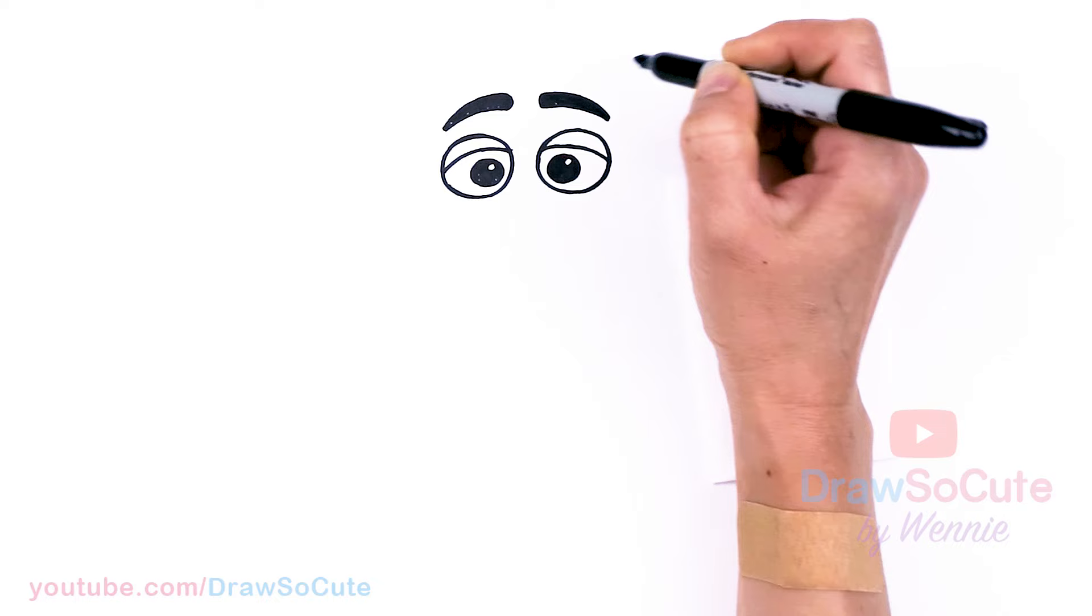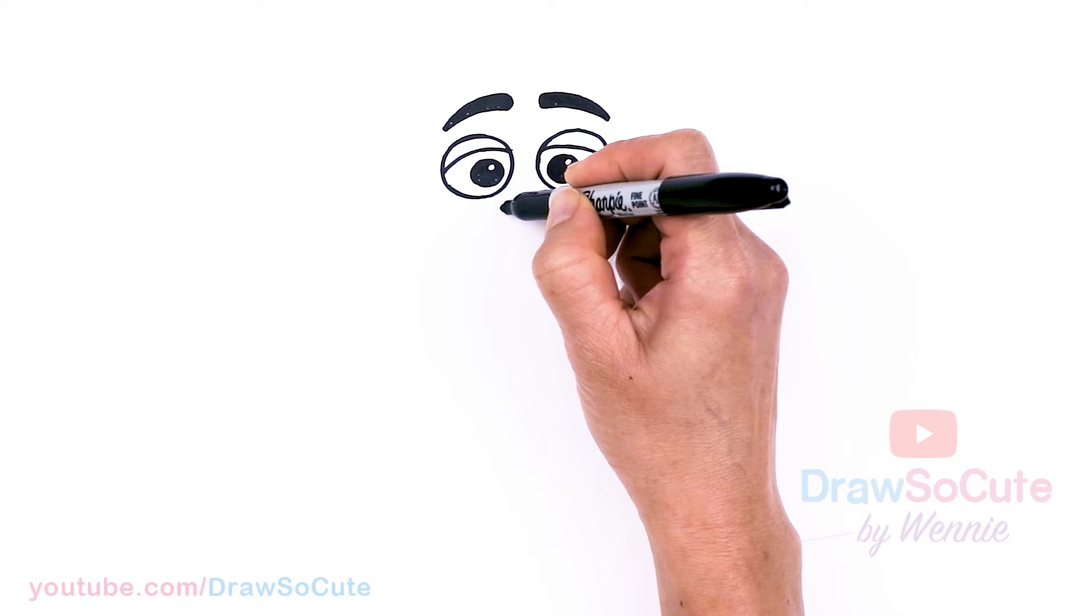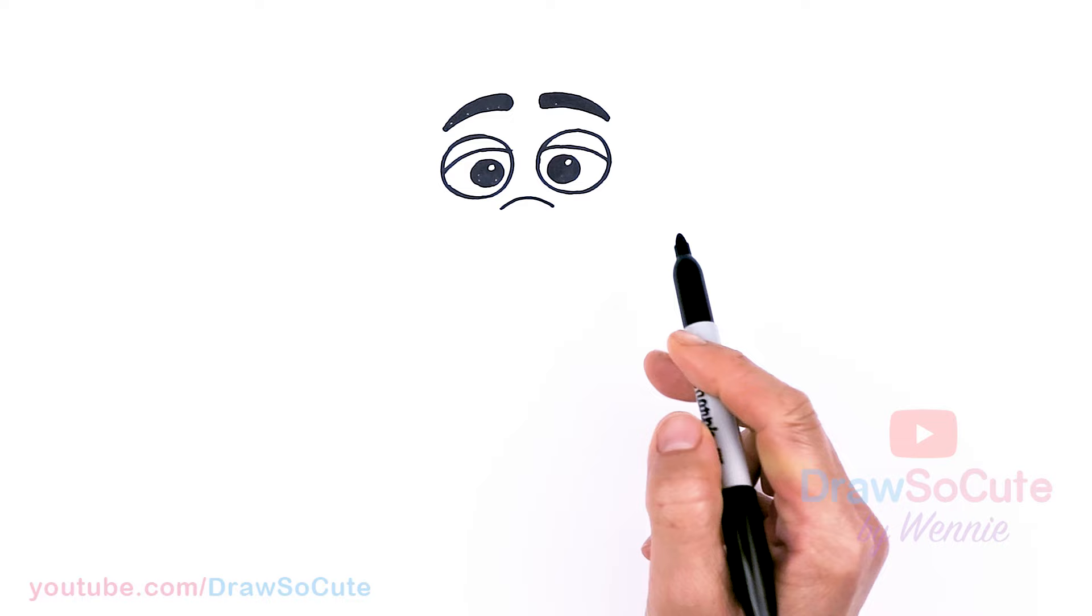Then from there, let's draw his mouth. So right in between the eyes, right here, I'm going to draw a curve. I'm going to start with a curve. Oh, that's so cute, right? It's so sad. But then now let's make Grimace happy.